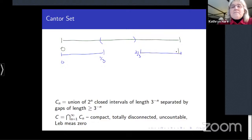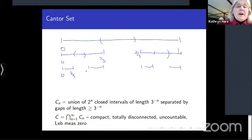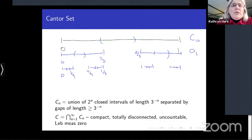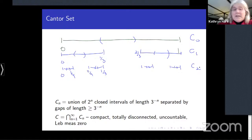Box dimension for a subset of ℝⁿ will always be a number between zero and n, but it doesn't have to be an integer. A nice example of that is the Cantor set. You start with the closed interval [0,1] and remove the middle interval of length one-third, keeping the two outer intervals of length one-third: [0, 1/3] and [2/3, 1]. Then you repeat the process.